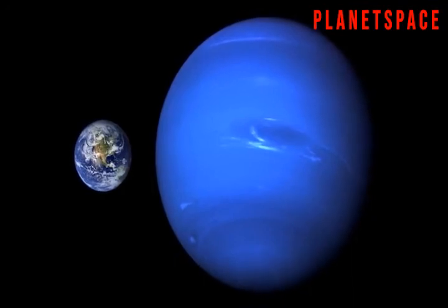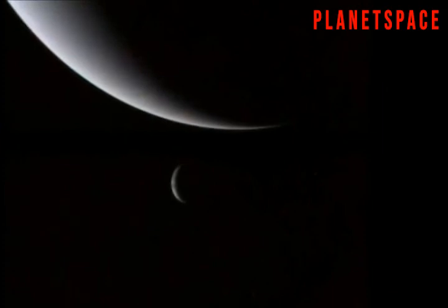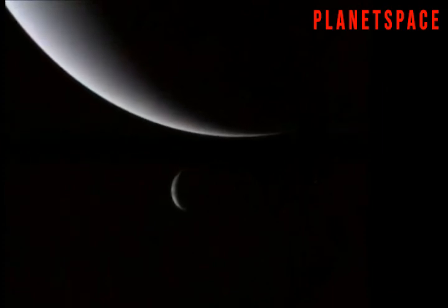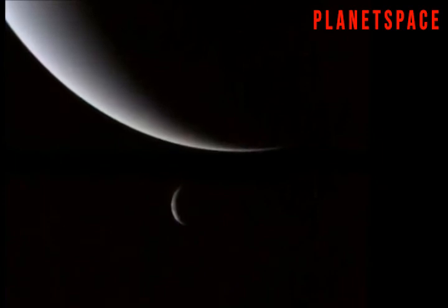Neptune has a few thin rings and 14 moons that we know about. Because Neptune is so far out in space, it takes it a very long time to go around the Sun.